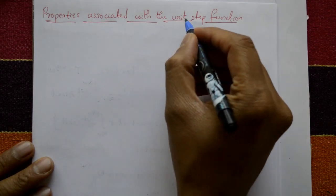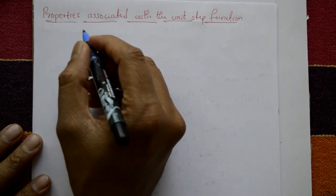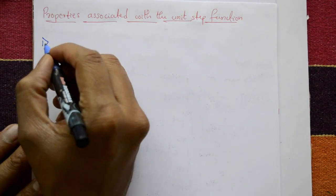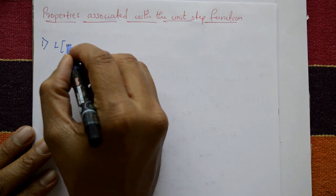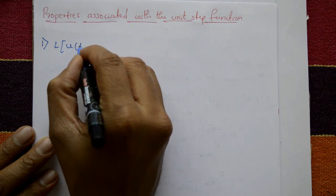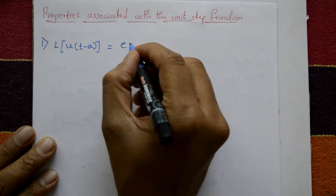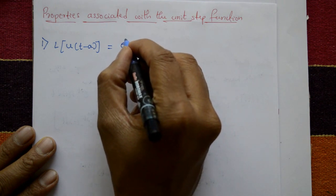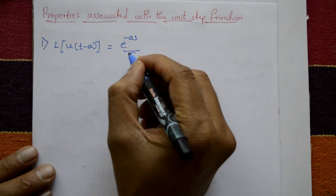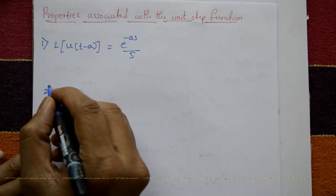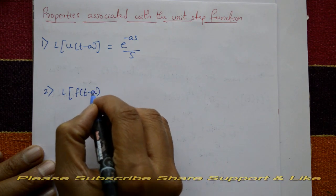Properties associated with the unit step function — total four properties. First one: Laplace of unit step function u(t minus a) is equal to e to the power minus as, divided by s.